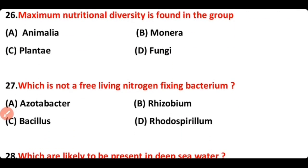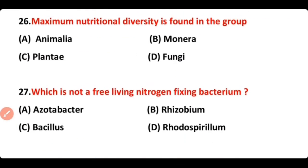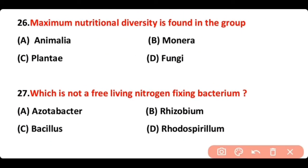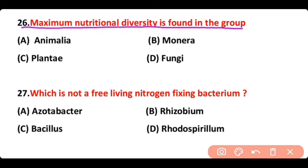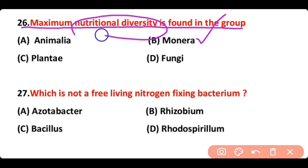Question 26. Maximum nutritional diversity is found in which group — Animalia, Monera, Plantae, or Fungi? The correct answer is option B — the maximum nutritional diversity is present in Monera.